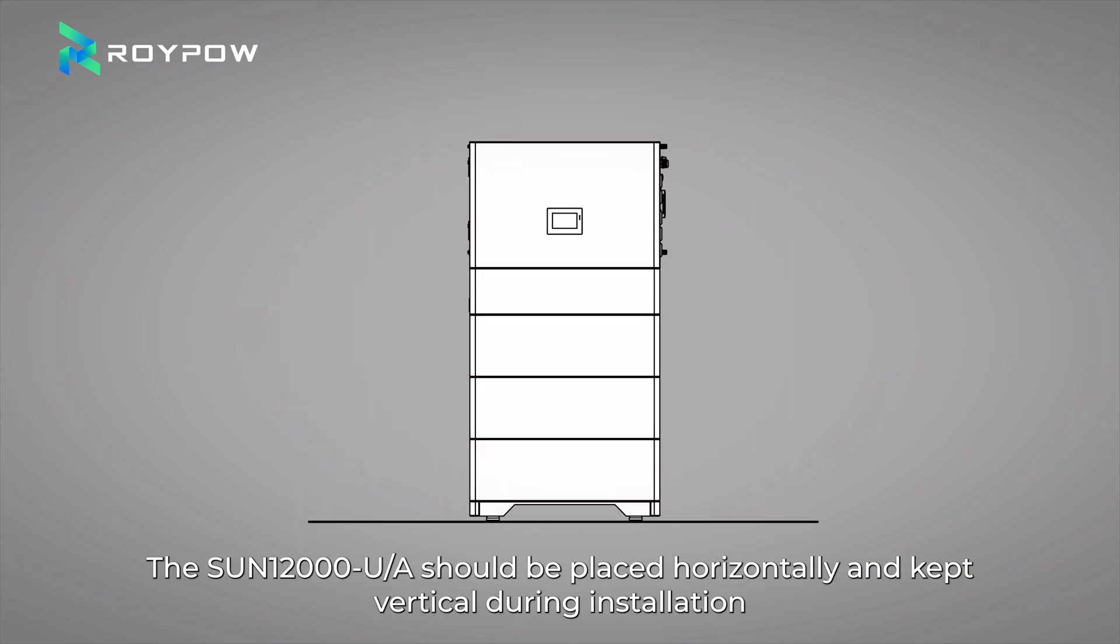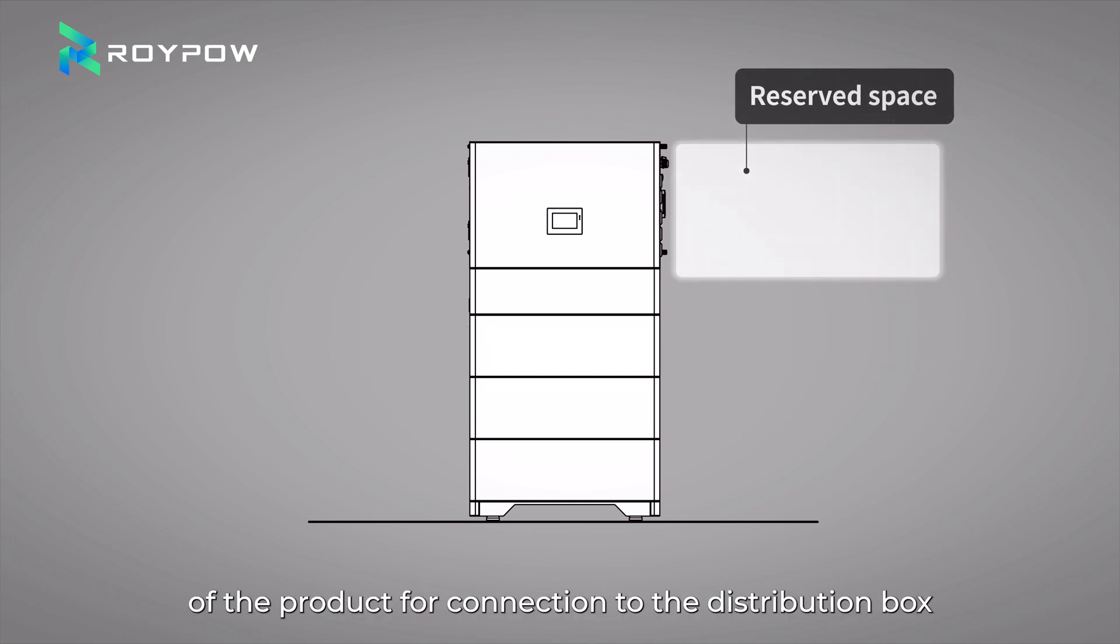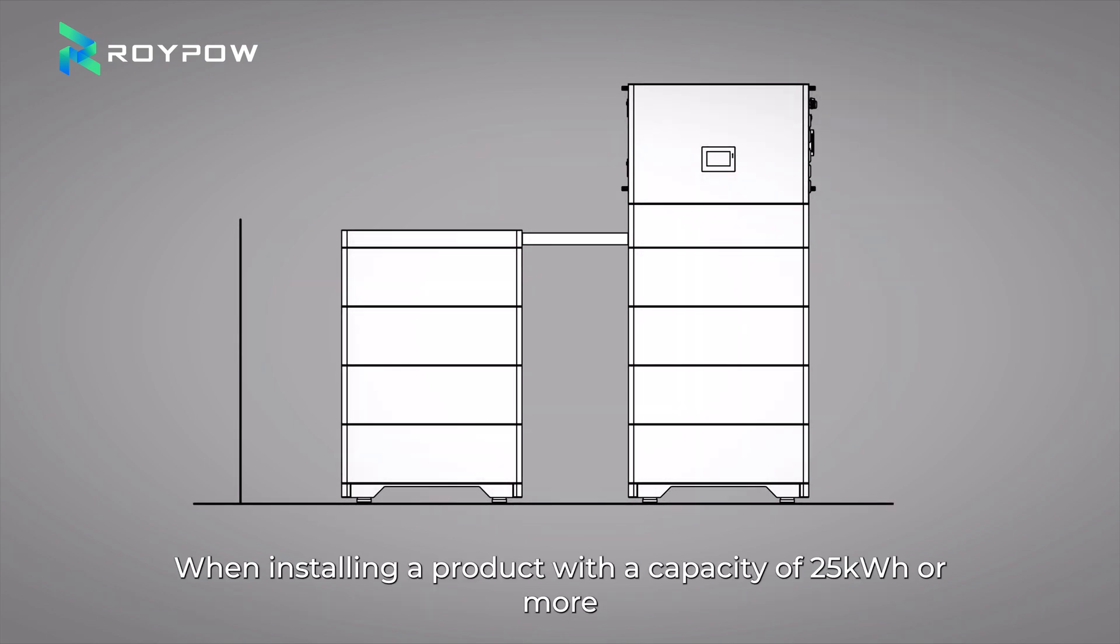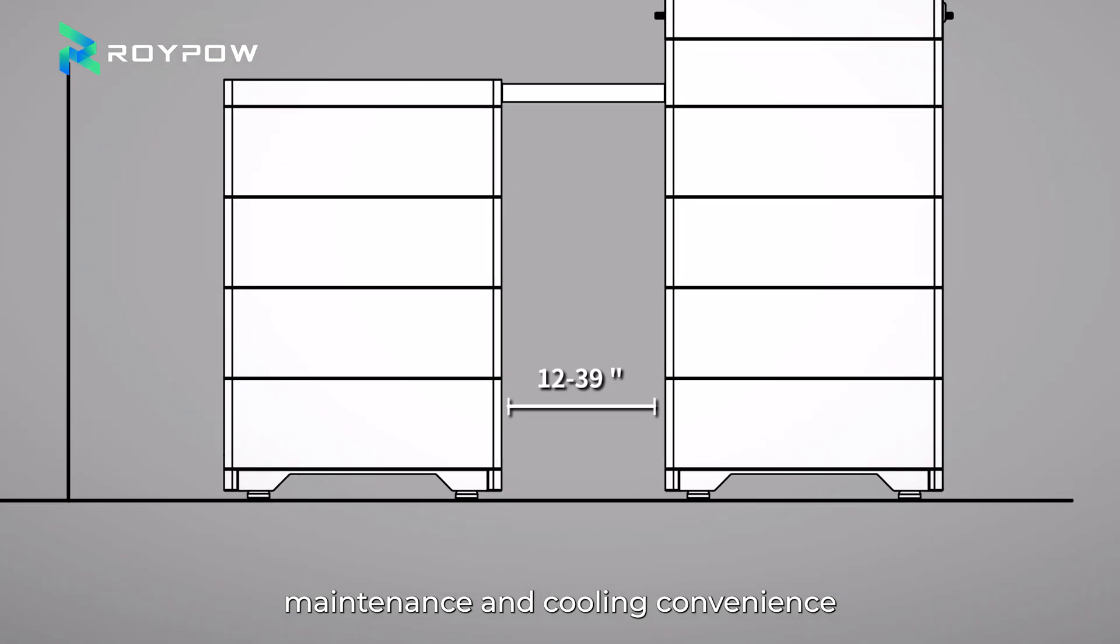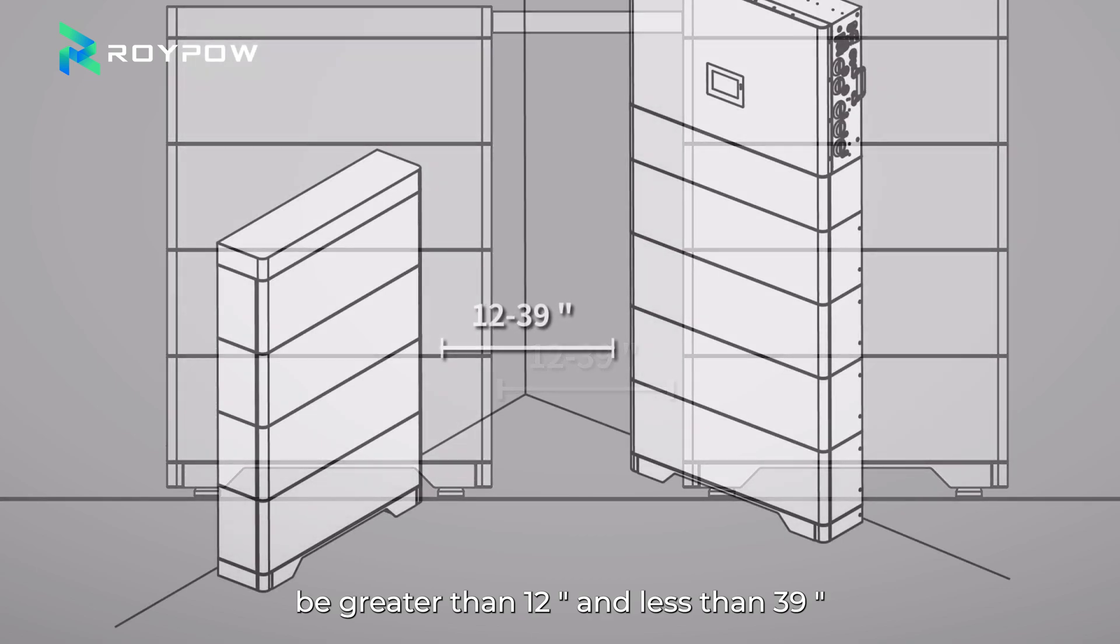The 12kW 15kWh System should be placed horizontally and kept vertical during installation. Maintain at least a 12-inch clearance on the left, right, and top sides of the product to ensure adequate ventilation for cooling. Ensure there is enough space on the right side of the product for connection to the distribution box. When installing a product with a capacity of 25kWh or more, install it in double tower. For installation, maintenance, and cooling convenience, it is recommended that the clearance between battery clusters be greater than 12 inch and less than 39 inch.